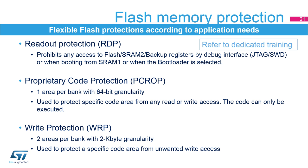Several flash memory protection options can be configured using the option bytes. The readout protection (RDP) option byte prohibits any access to the flash memory, SRAM 2, and the backup registers by the debug interface, or when booting from SRAM 1, or when the bootloader is selected. The proprietary code protection (PCROP) option byte protects a specific code area from any read or write access — the code can only be executed. The protected area can be defined with 64-bit granularity, and one area can be defined in each bank. The write protection (WRP) option byte protects specific code areas from unwanted write access, with 2-kilobyte granularity.